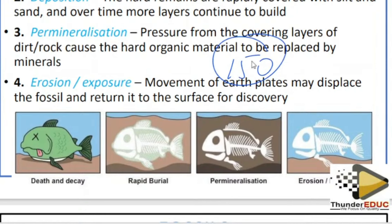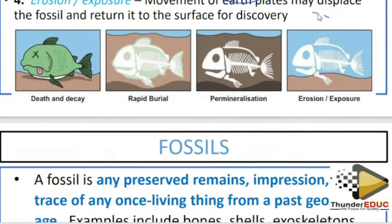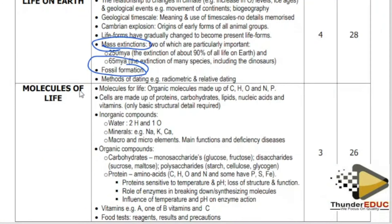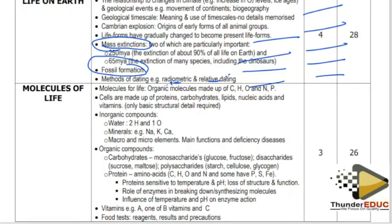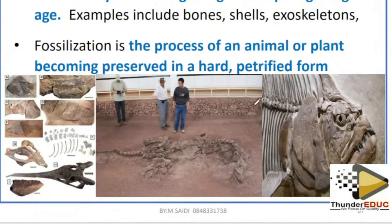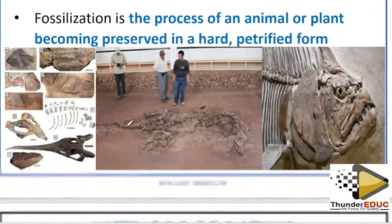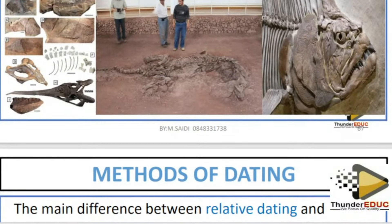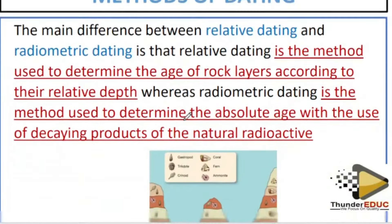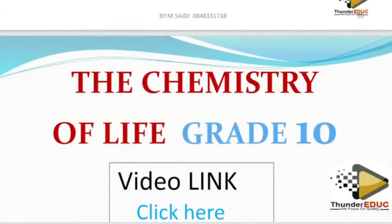The paper is 150 marks, so they're going to test almost everything. Know fossil formation and the methods of dating — radiometric dating uses radioactive substances to find the actual age, while relative dating uses layers of soil. Make sure you know the different types of fossils and the dating methods.